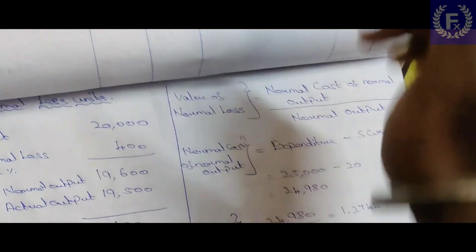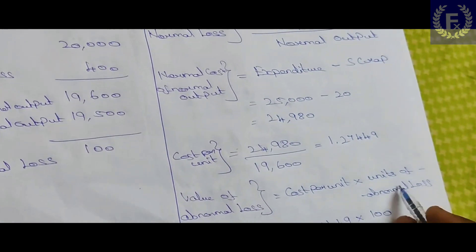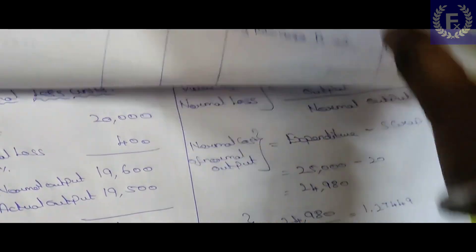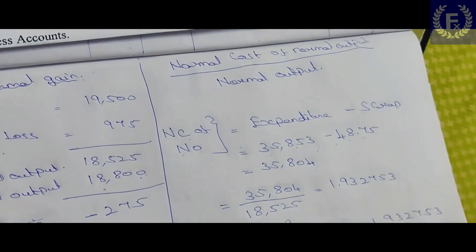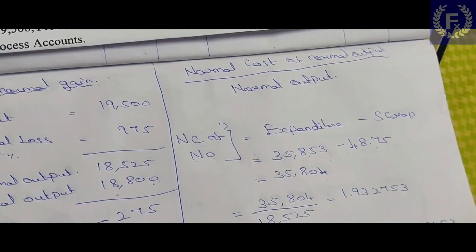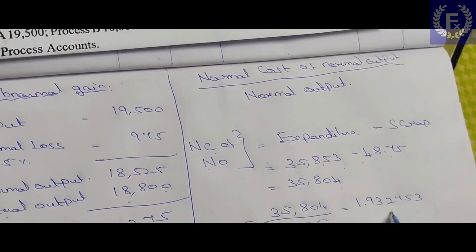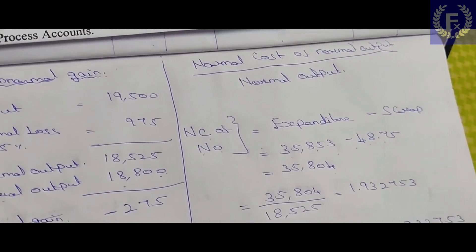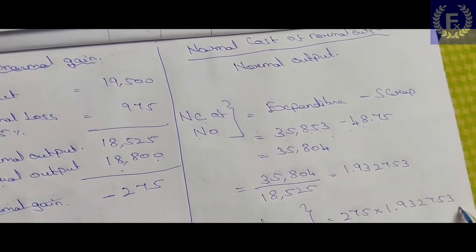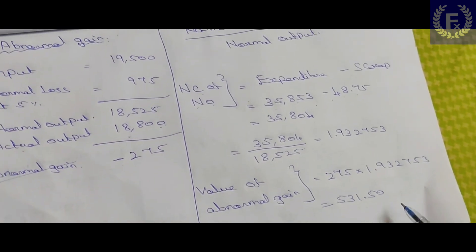The formula for value of abnormal gain is: cost per unit multiplied by units of abnormal gain. Cost per unit is approximately 1.933 and abnormal gain units are 275. So, value of abnormal gain = 1.933 × 275 = approximately 531.50.